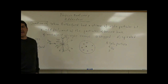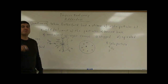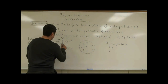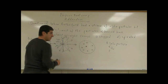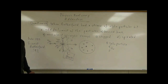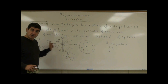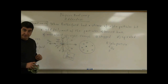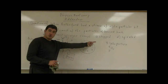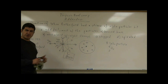What actually happened was that most of the helium nuclei — the alpha particles — went straight through. About one in 8000 bounced back. So out of 8000 alpha particles, 7999 went through and only one bounced straight back. What does that mean?